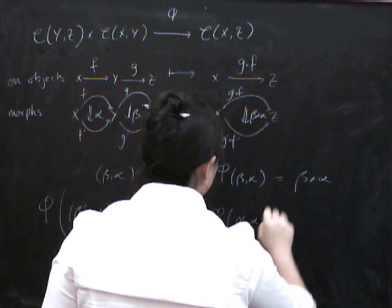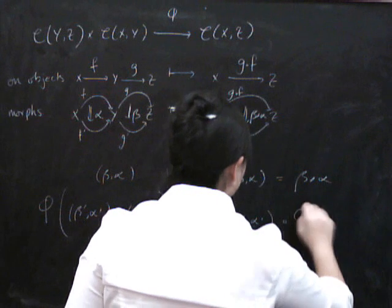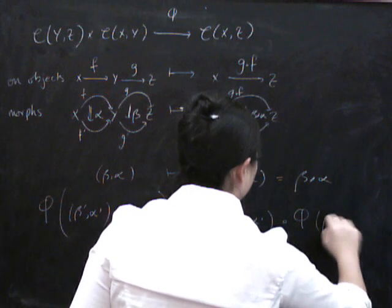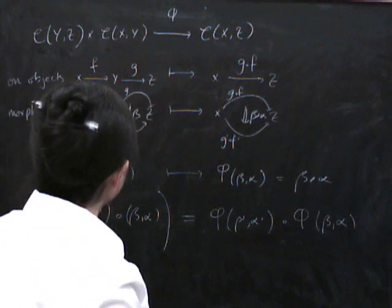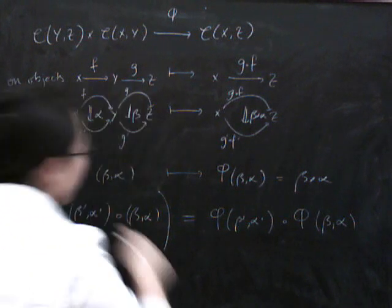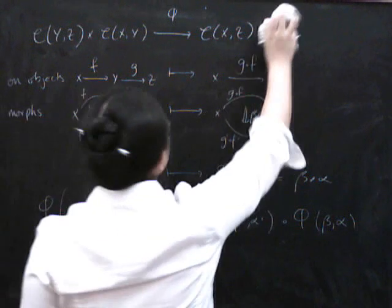And we have to show that phi of the composite equals what we do individually: phi of (beta prime, alpha prime) composed with phi of (beta, alpha). So now let's look at what on earth this beta and alpha and beta prime and alpha prime would be.